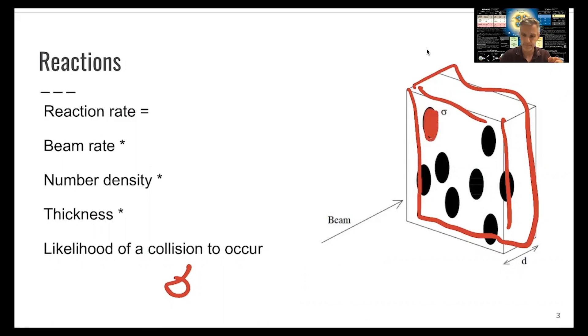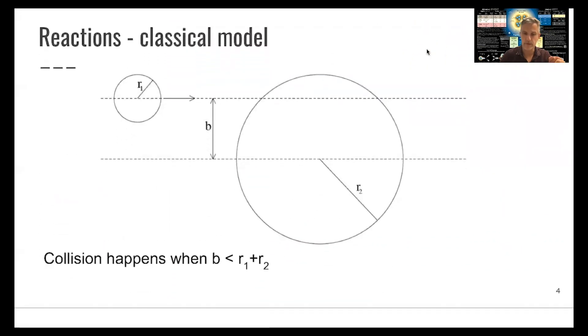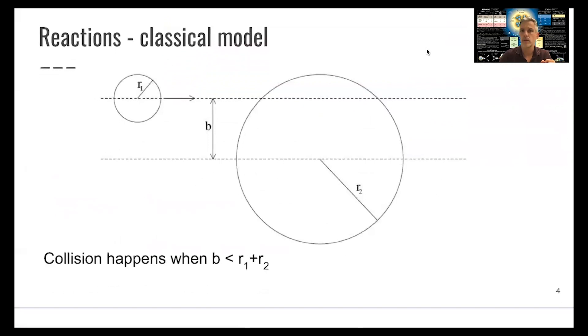So let's look at this a little bit more. Again, we stay with a very classical model, a model in which we have two billiard balls: a light one, a small one with radius r1, and a larger one with a radius r2. Clearly, a collision occurs when the impact parameter b here between those two billiard balls is smaller than the sum of the radius.